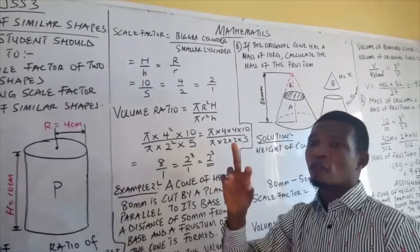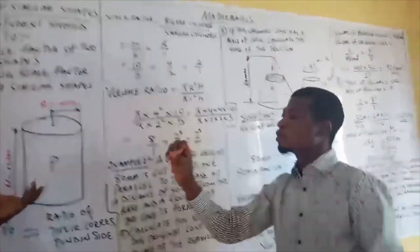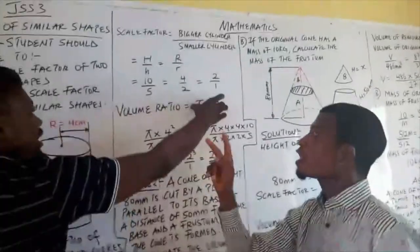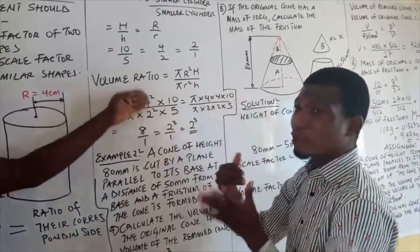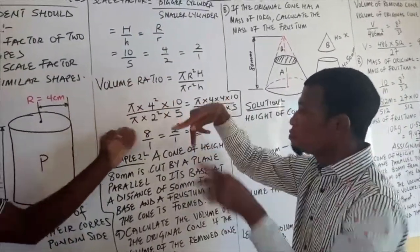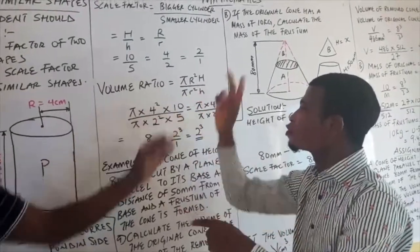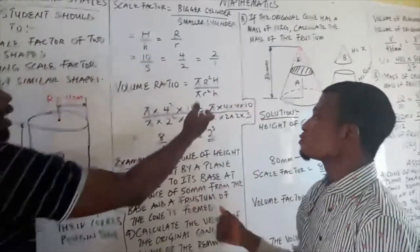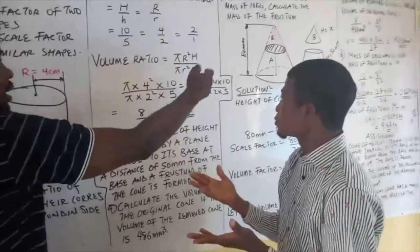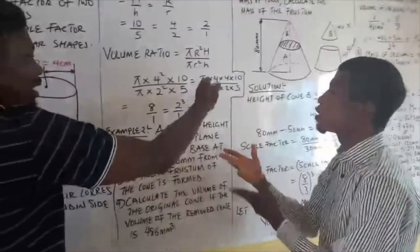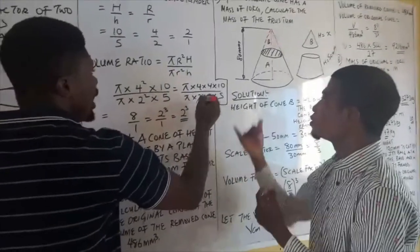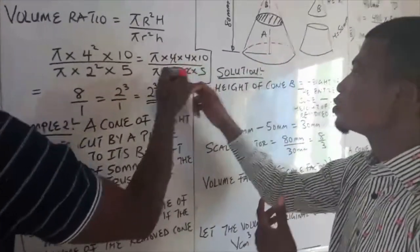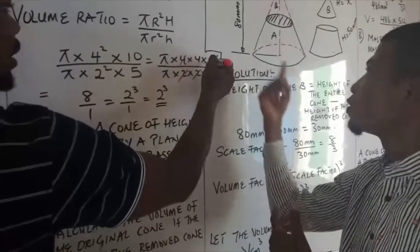Volume ratio of these two cylinders: we have the bigger cylinder over the smaller cylinder. If you do this we have π×4²×10 over π×2²×5. Let me expand this here, so if you have π×4×4×10 over π×2×2×5.